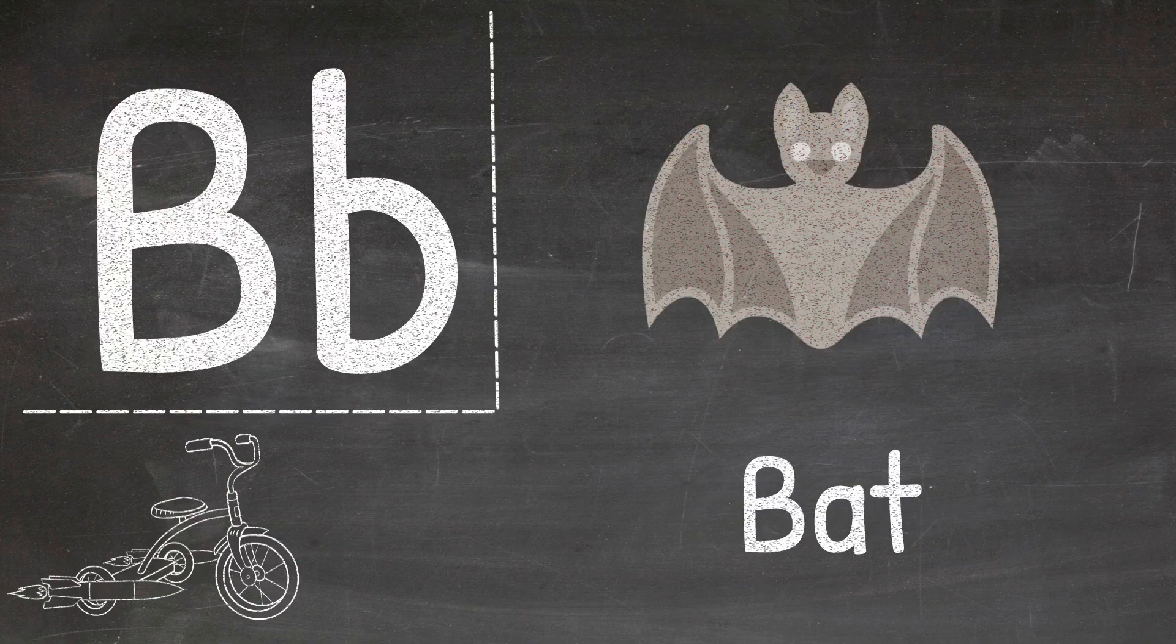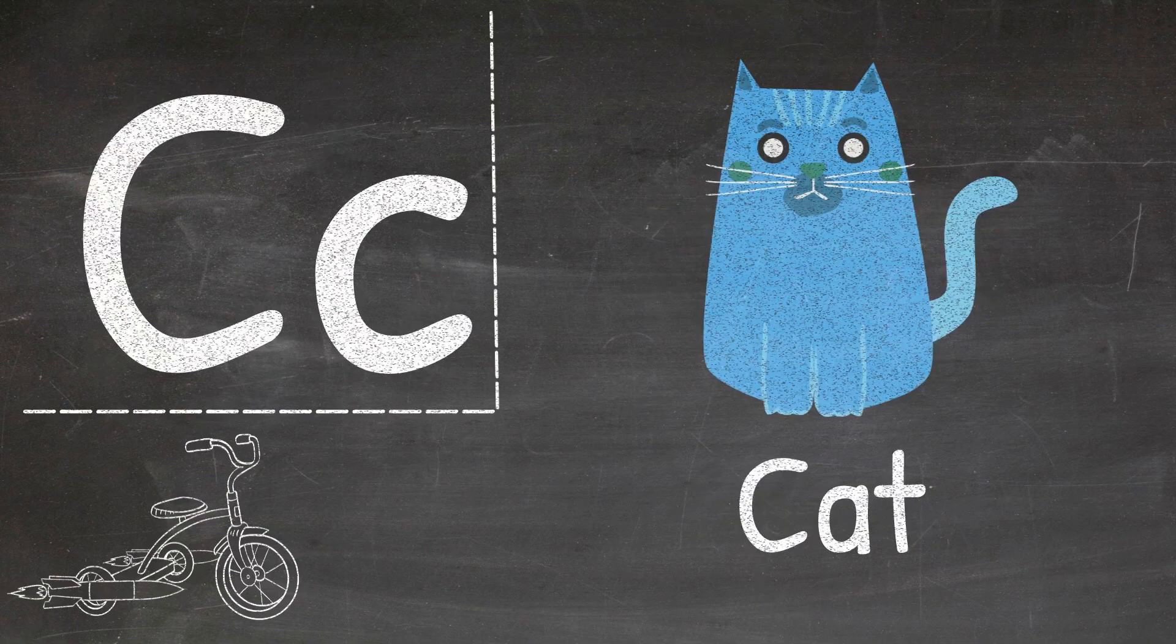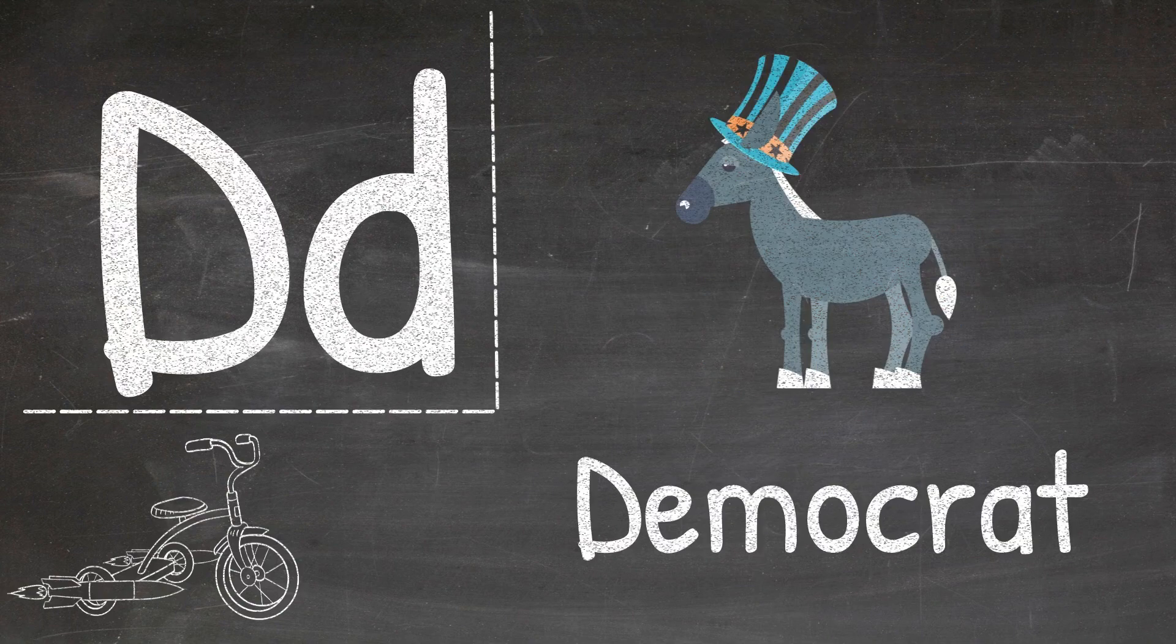A is for apple, B is for bat, C is for cat, D is for democrat.